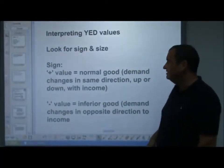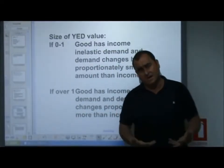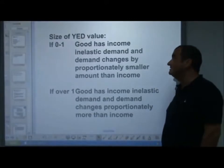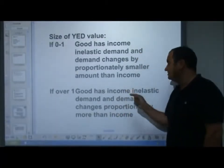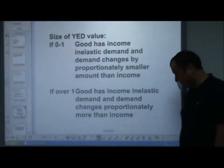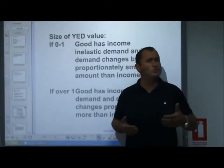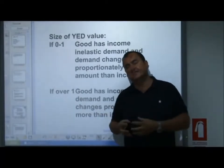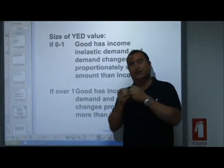Moving on, we've looked at the sign, but we also need to look at size. If the size lies between zero and one, or zero and minus one, we say the good has income inelastic demand, and demand changes by proportionately smaller amounts than income. If the answer comes out as more than one, or minus one, the good has income elastic demand, and demand changes proportionately more than income. Sign tells us whether it's a normal good or an inferior good; size of the number — irrespective of the sign — tells us whether the good has income elastic or income inelastic demand. There are two separate readings you have to get out of the value of YED.